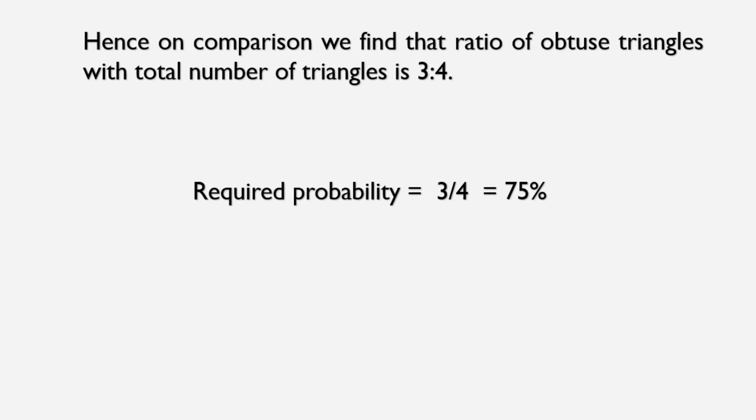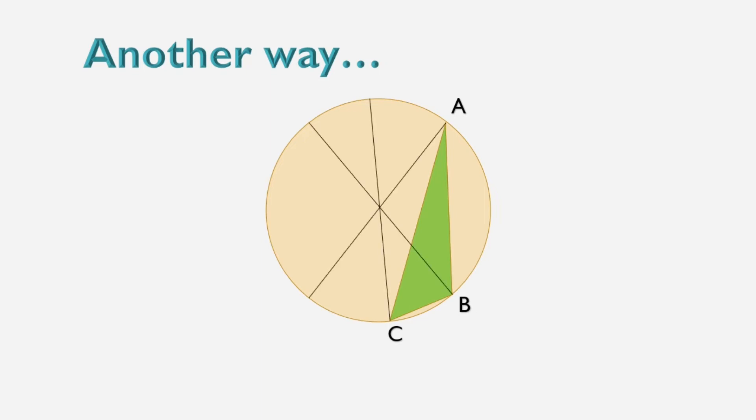Here is another way to solve the problem. Let's start with the triangle ABC. This time we will draw circumcircle and circumcenters instead of orthocenter. Draw the diameters of the triangle with end points A, B and C. Draw the opposite or name the opposite ends A', B' and C'.